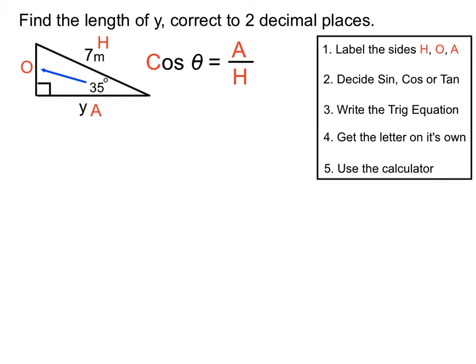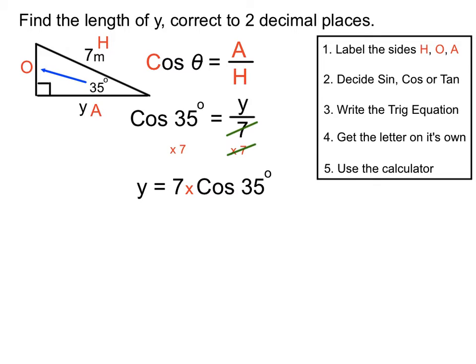We write cos theta equals adjacent over hypotenuse, then fill in all the numbers. The angle is 35 degrees, y is in the adjacent position on top, and 7 metres is the hypotenuse on the bottom. We multiply both sides by 7 to get y on its own: y equals 7 times cos 35. That gives us 5.73 metres rounded to two decimal places — just less than 7, which makes sense.